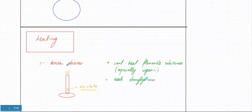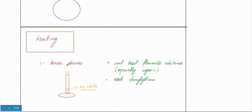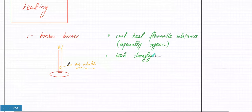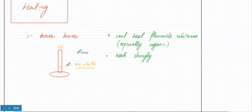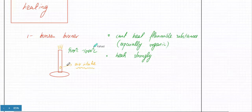A second issue is that a Bunsen burner heats very strongly. You can't use it for gentle heating. If an experiment requires heating slowly and not going above 50°C, you can't use a Bunsen burner — it reaches 900 to 1000 degrees centigrade. So if you only want to heat something to 70°C, you wouldn't use a Bunsen burner.